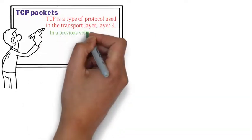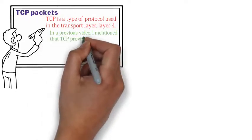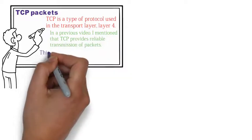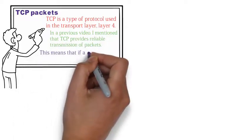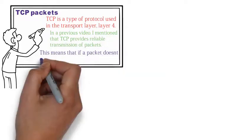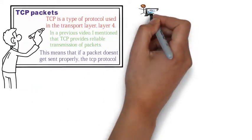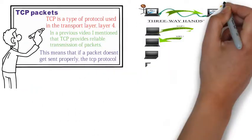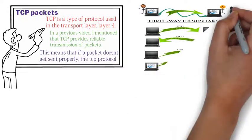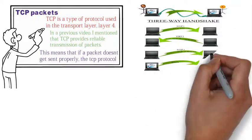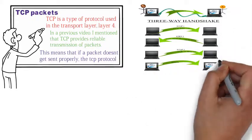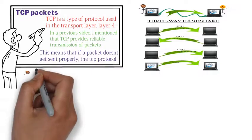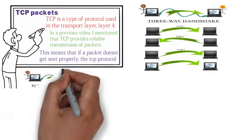In our previous videos, I mentioned that TCP provides reliable transmission of packets. This means that if a packet doesn't get sent properly, the TCP protocol would detect the error and send it again. I also mentioned the three-way handshake, which is a three-step initiation process that two devices use before transmitting packets amongst each other.